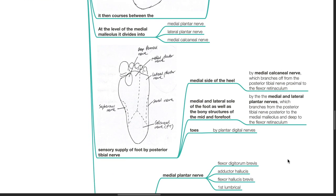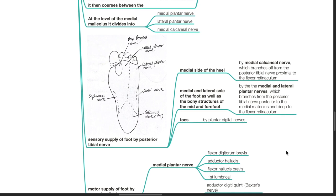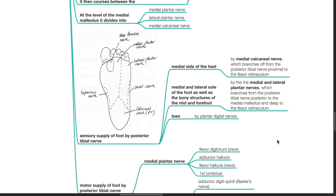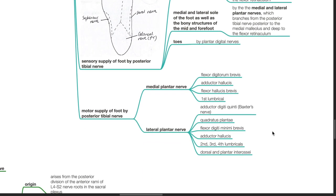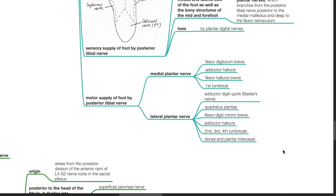Sensory supply of the foot by the posterior tibial nerve: Medial side of the heel by the medial calcaneal nerve, which branches off from the posterior tibial nerve proximal to the flexor retinaculum. Medial and lateral sole of the foot, as well as bony structures of the mid and forefoot, by the medial and lateral plantar nerves, which branch from the posterior tibial nerve posterior to the medial malleolus and deep to the flexor retinaculum. Toes by the plantar digital nerves. Motor supply: Medial plantar nerve supplies the flexor digitorum brevis, abductor hallucis, flexor hallucis brevis, and first lumbrical. Lateral plantar nerve supplies the abductor digiti quinti, quadratus plantae, flexor digiti minimi brevis, adductor hallucis, second, third and fourth lumbricals, and dorsal and plantar interossei.